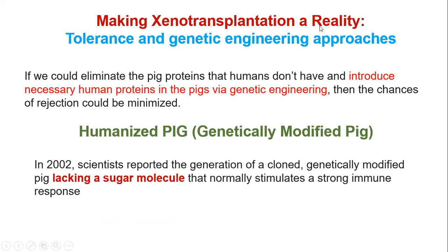The immune response to xenografts is more extreme than in allografts. Sugars like alpha-gal and other proteins on the pig cell surface that humans don't have elicit a stronger response. To make xenotransplantation a reality, scientists used tolerance mechanisms and genetic engineering — creating a 'humanized pig' that produces human-compatible organs. In 2002, scientists reported the first cloned pig with the alpha-gal sugar gene knocked out, producing a less immunogenic graft.